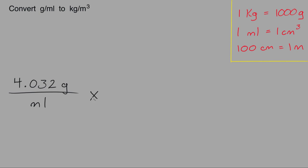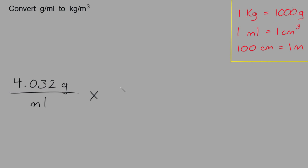I would multiply this by the conversion factor of one kilogram equals 1000 grams. I'll place the number with the units of grams on the bottom, because this unit of grams is on the top. When you have the same units on the top and bottom of the fractions they will cancel out, which is what we want because we want to convert the 4.032 grams into kilograms. So we need the unit of grams to cancel.